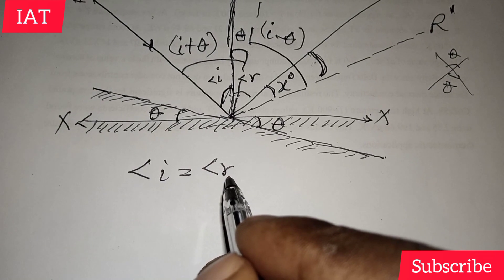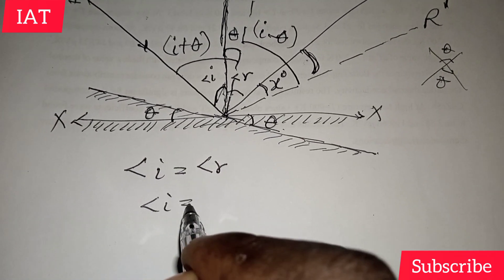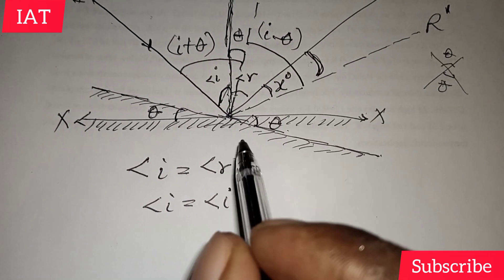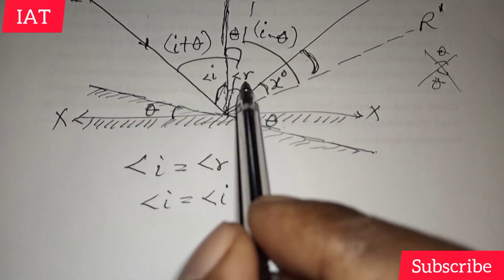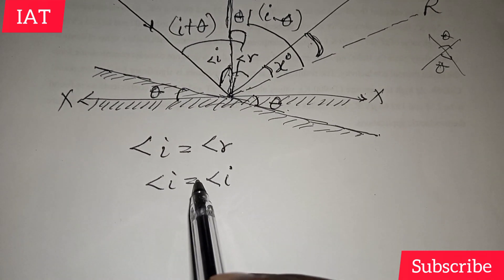So literally, we could also say that angle i is equal to angle i. Alright. Because the incident angle is always equal to the reflected angle. So you can represent it in this form. Okay.